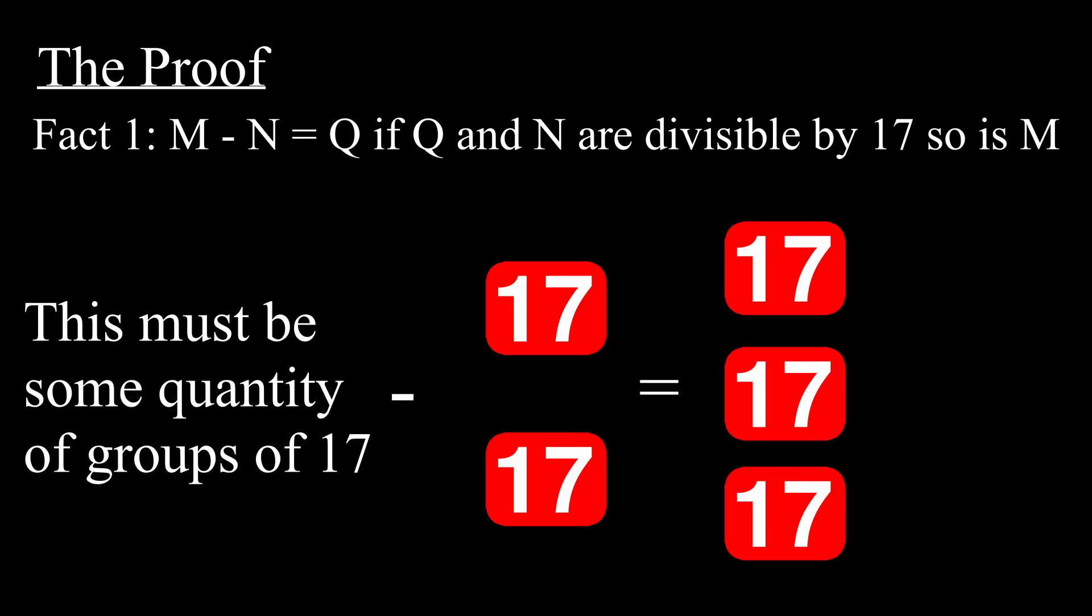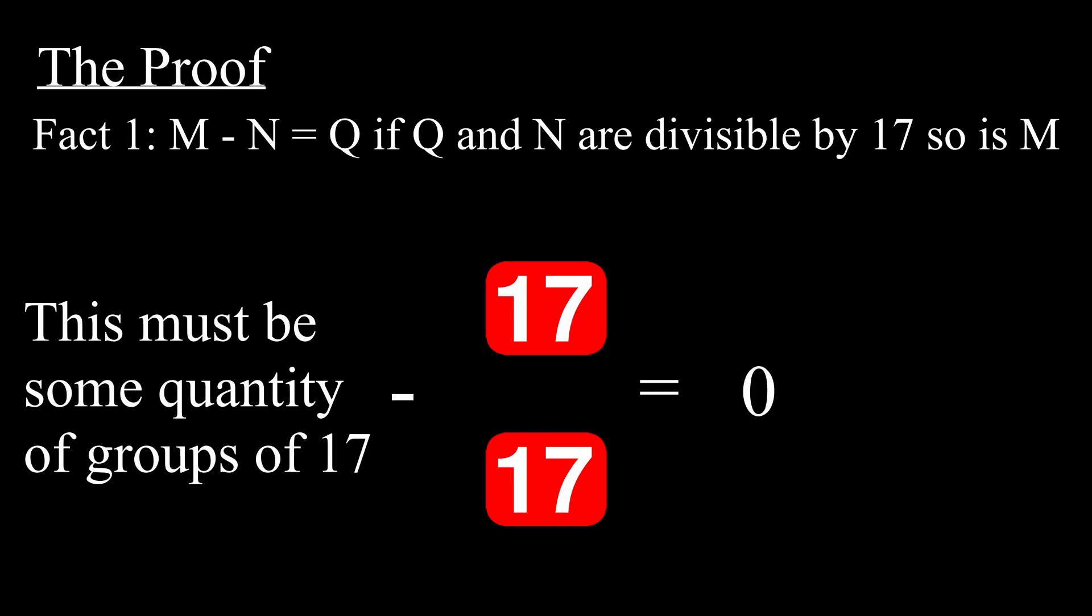Intuitively, what this means is that if we end up with groups of 17 and subtracted groups of 17, then we must have started with groups of 17. Note that this is also true if we end up with 0 or negative groups of 17, which also holds for our divisibility rule.